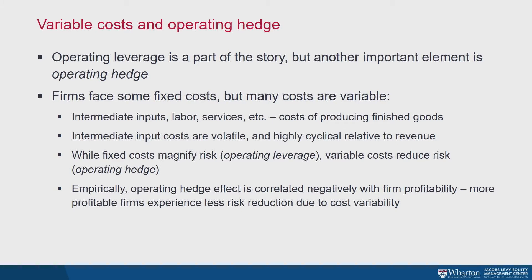What we focus on in this paper is the assumption that costs are relatively fixed compared to revenue. Firm costs come in different shapes and forms — some can be modeled as relatively fixed or sticky, but some are pretty variable. When you think about many of the costs that firms face, they're very far from being fixed and they co-move a lot with firm revenue. Intermediate inputs — the labor and services used to produce finished goods — are very far from being constant. That means the effect on cash flow risk is not really that of operating leverage, but more like an operating hedge.